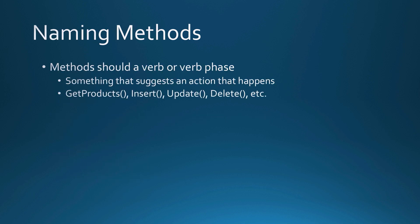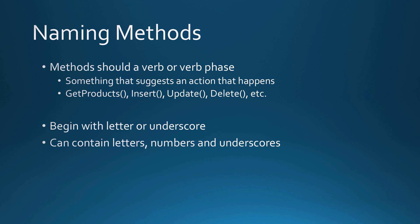When naming a method, methods should be a verb or a verb phrase — something that suggests an action. For example, get products, insert, update, delete are good examples of method names. Methods should always begin with a letter or an underscore, though I would lean towards just using a letter. After that, the method name can contain letters, numbers, and underscores, and can be up to 255 characters long.